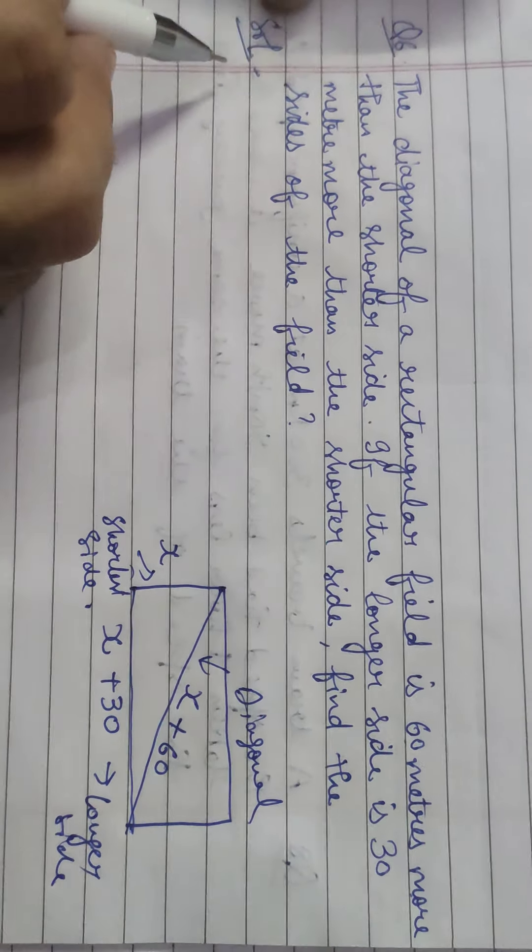Let the Shefali's marks in Mathematics equal X. Since X plus Y equals 30, Y equals 30 minus X. So English marks = 30 minus X, and Mathematics marks = X.